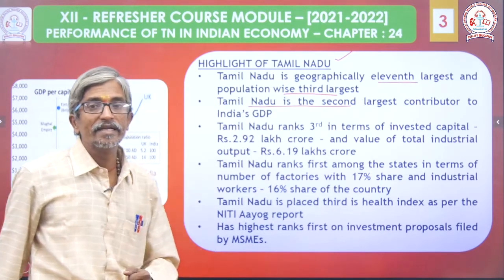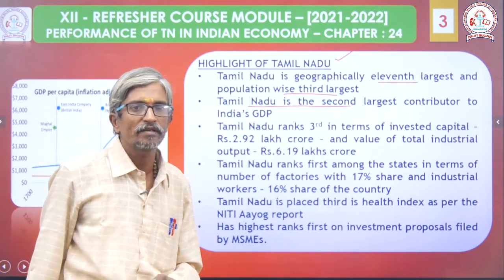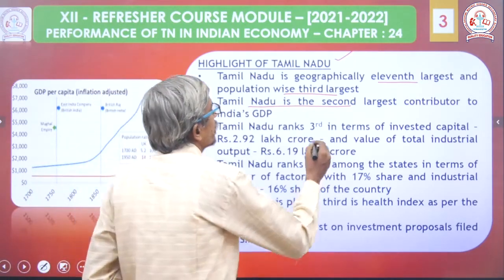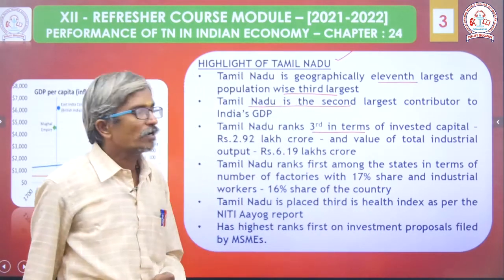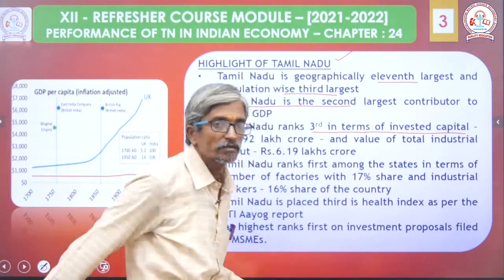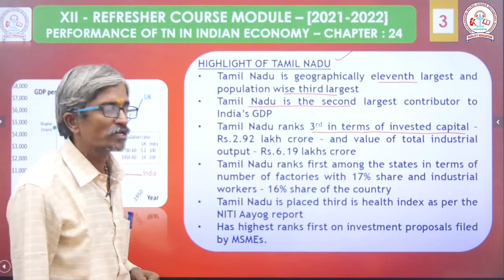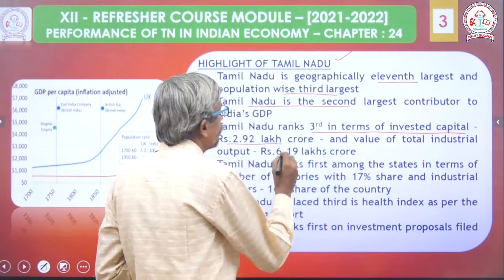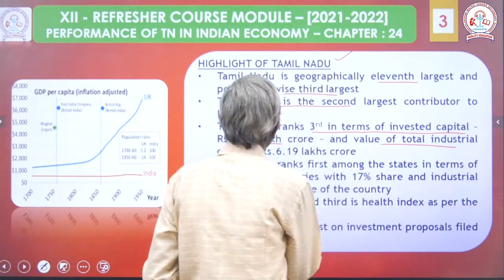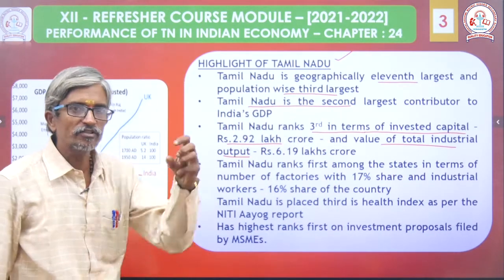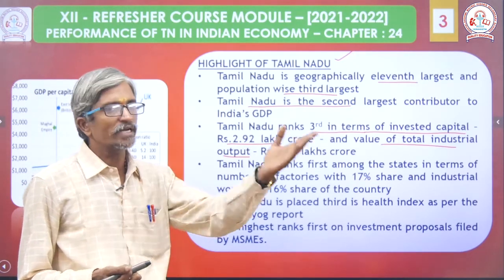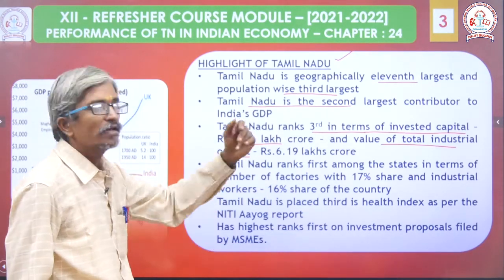Tamilnadu is the second largest contributor to India's GDP. Tamilnadu ranks third in terms of invested capital — 2.92 lakh crores. And the value of total industrial output has nearly tripled, reaching 6.19 lakh crores.